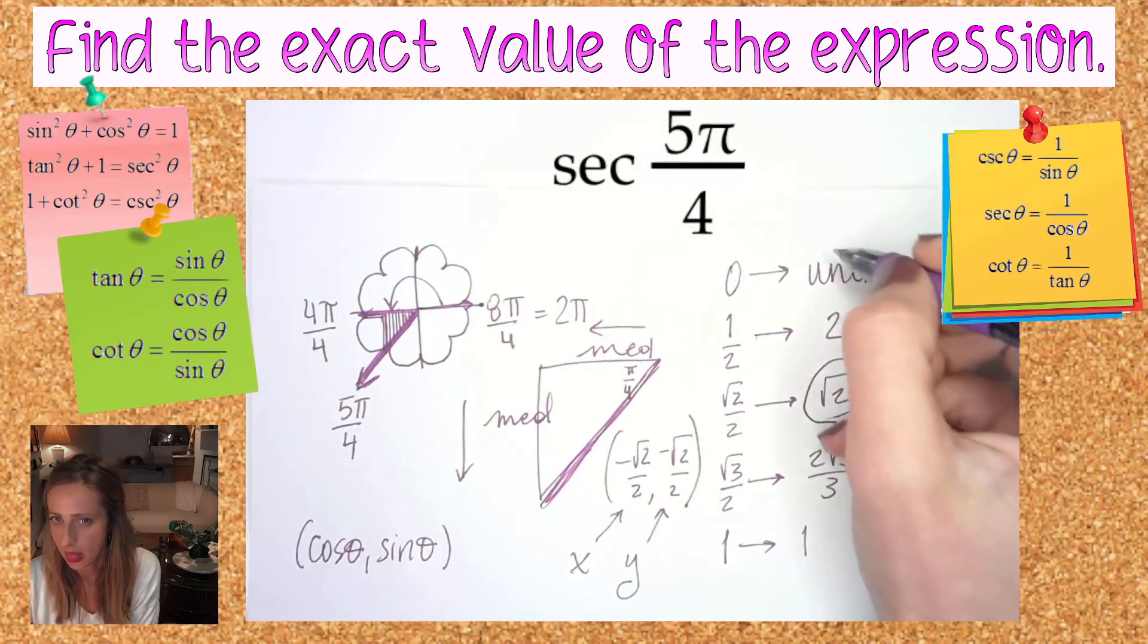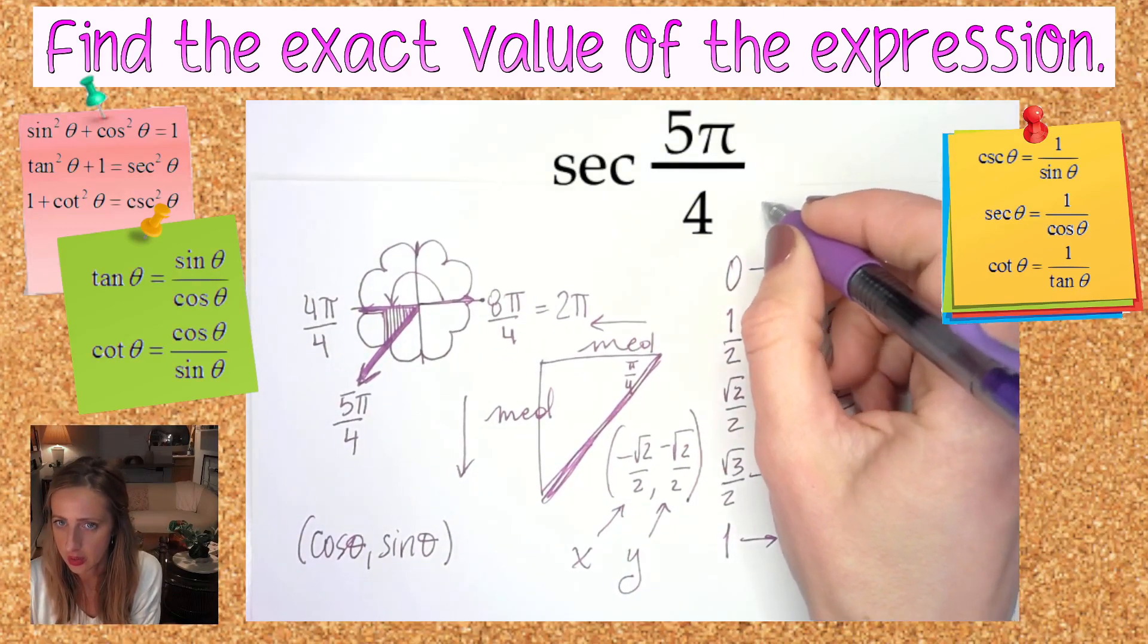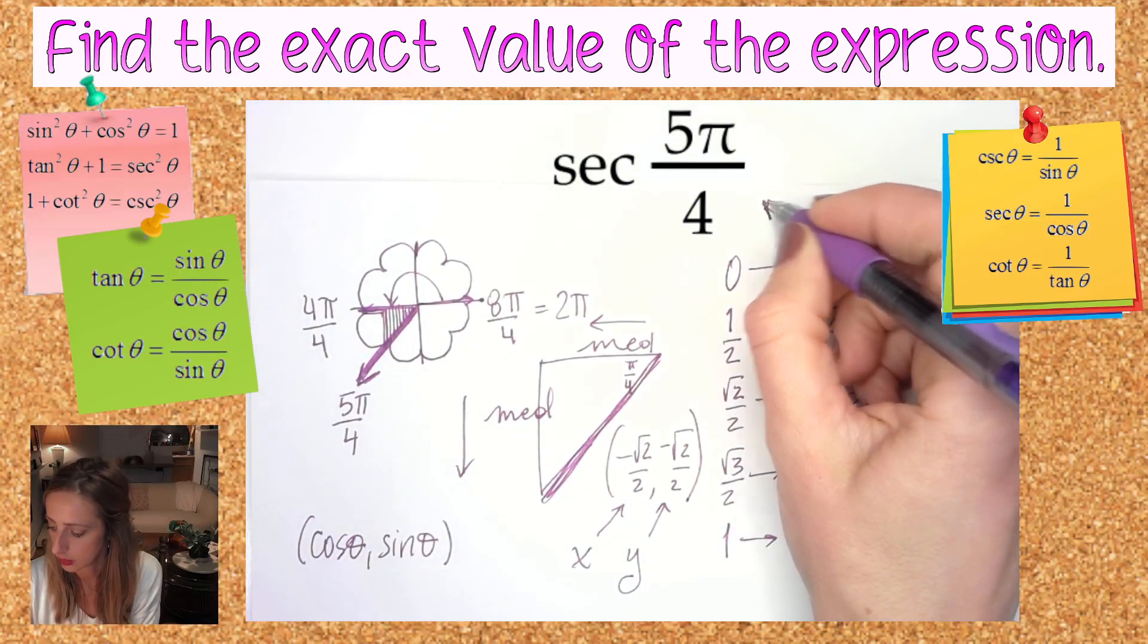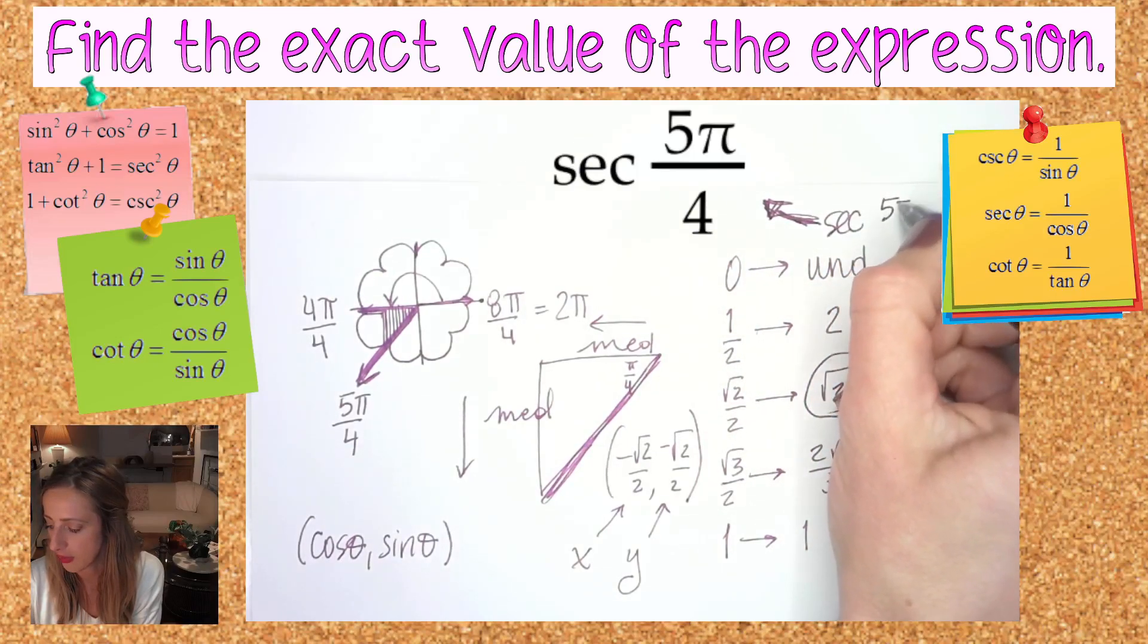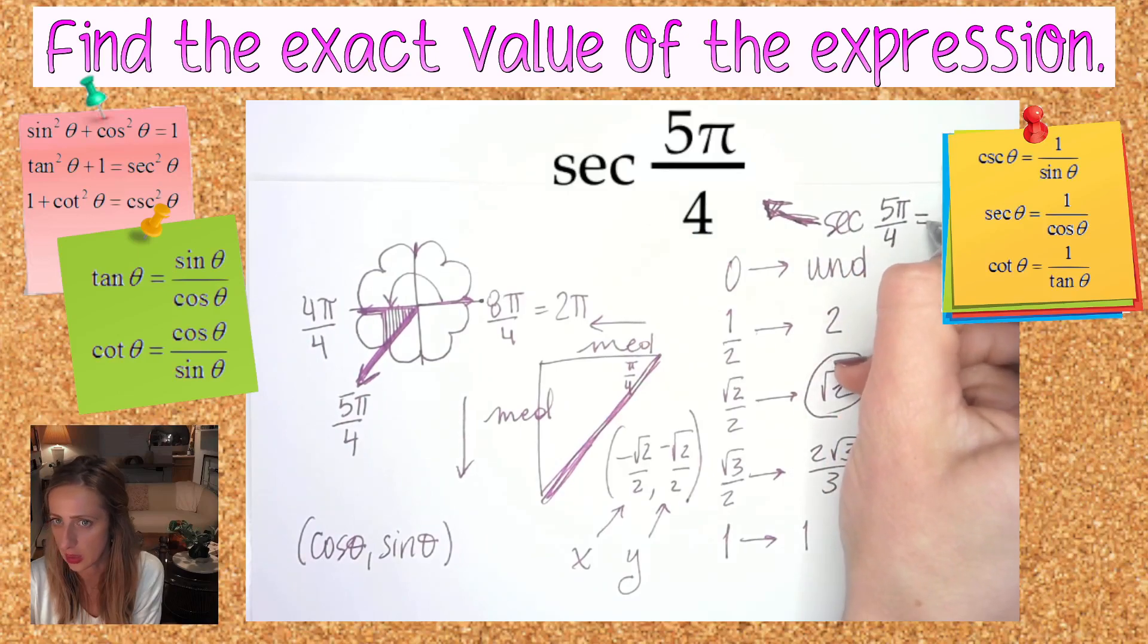That means final answer: the secant of 5π over 4 equals negative root two.